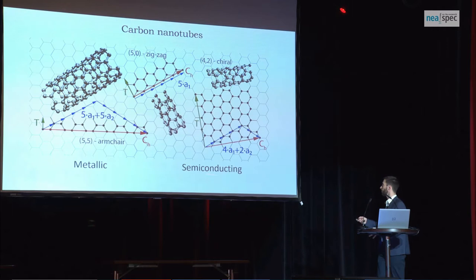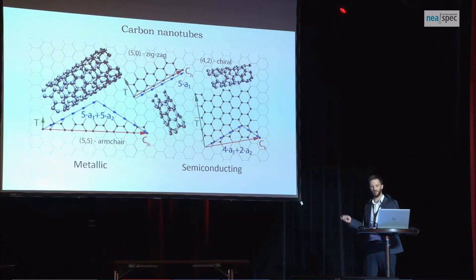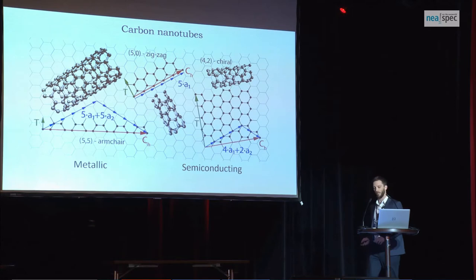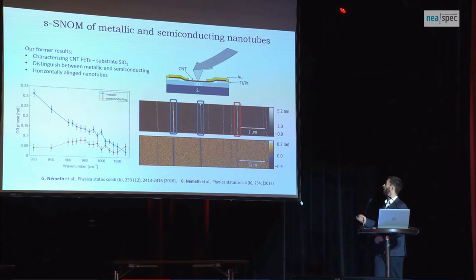Everyone is really excited about the semiconducting ones because you can make field effect transistors out of them, but unfortunately the selective production of these semiconducting carbon nanotubes is really cumbersome. In our earlier results, we used SNOM to actually differentiate between metallic and semiconducting carbon nanotubes in a real field effect transistor device.